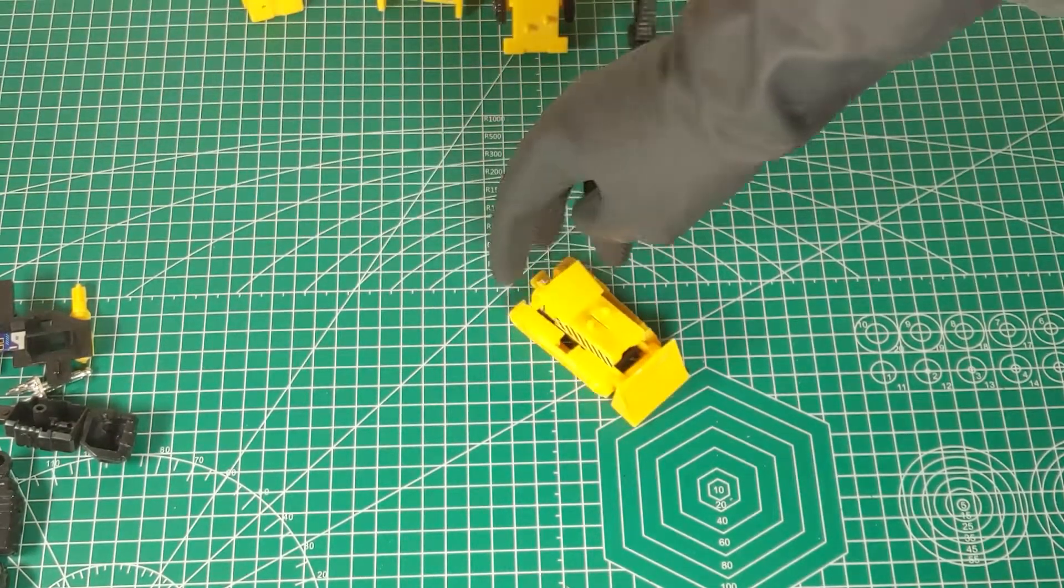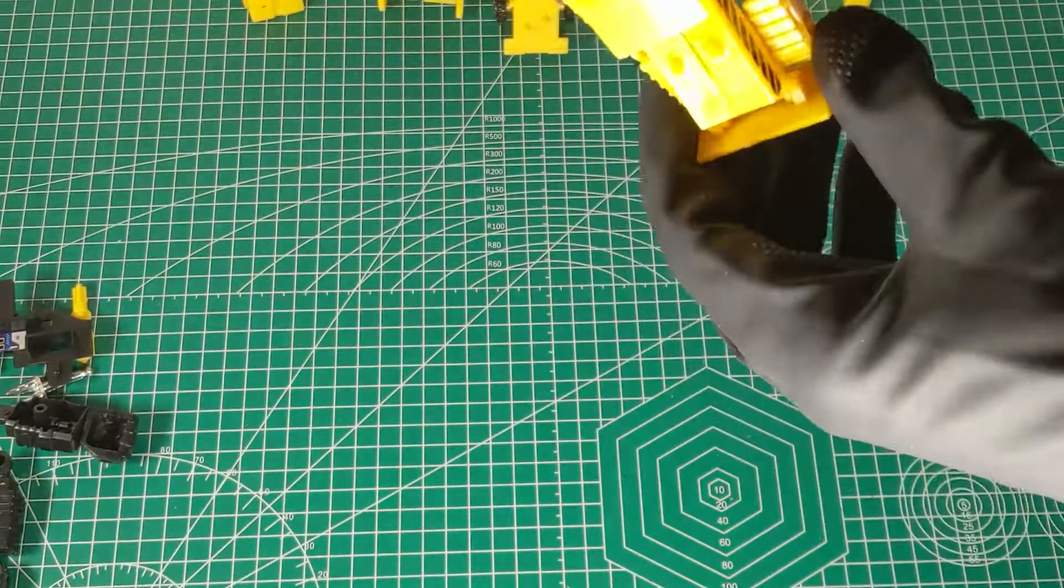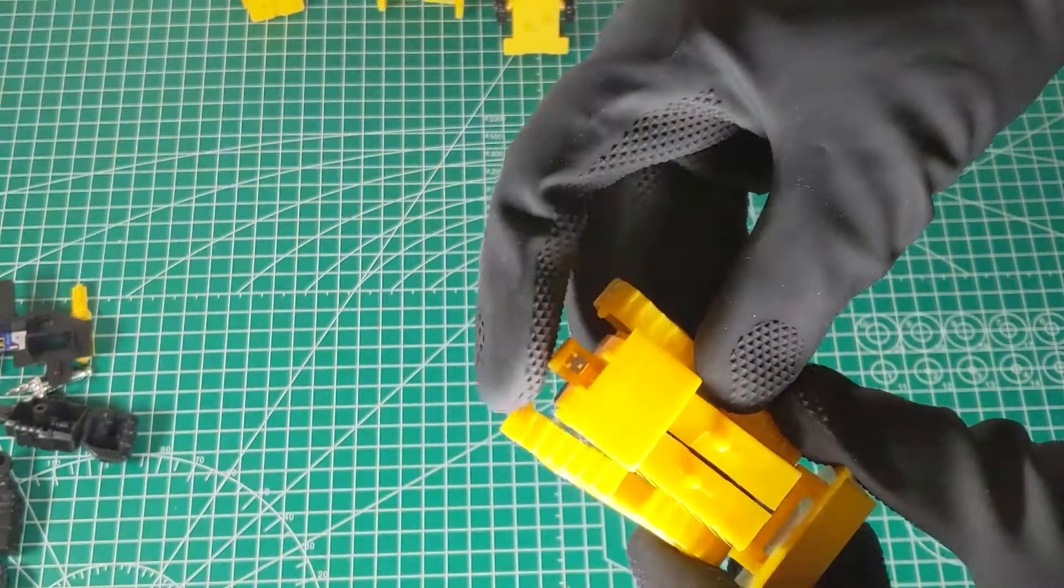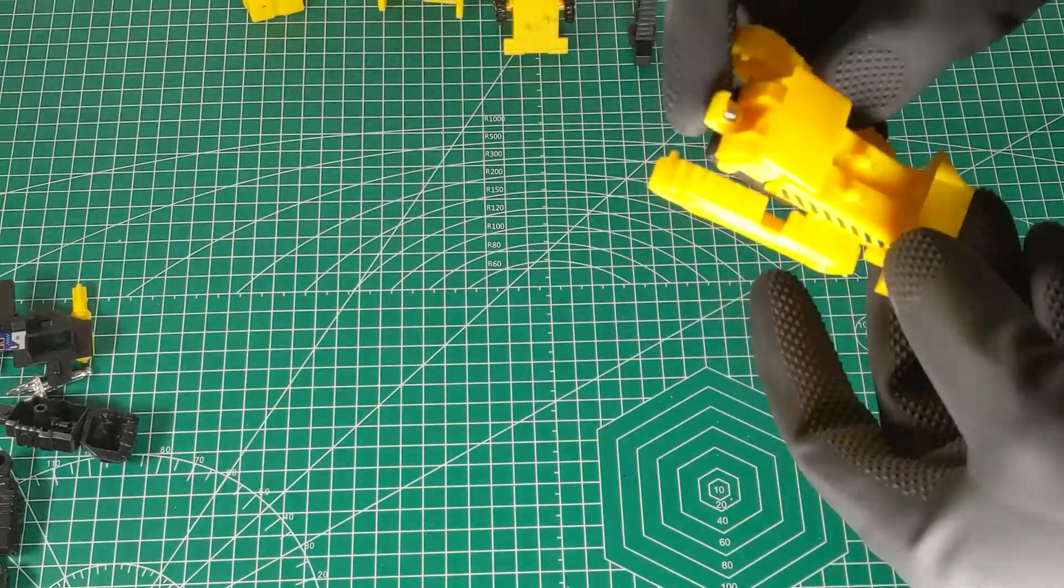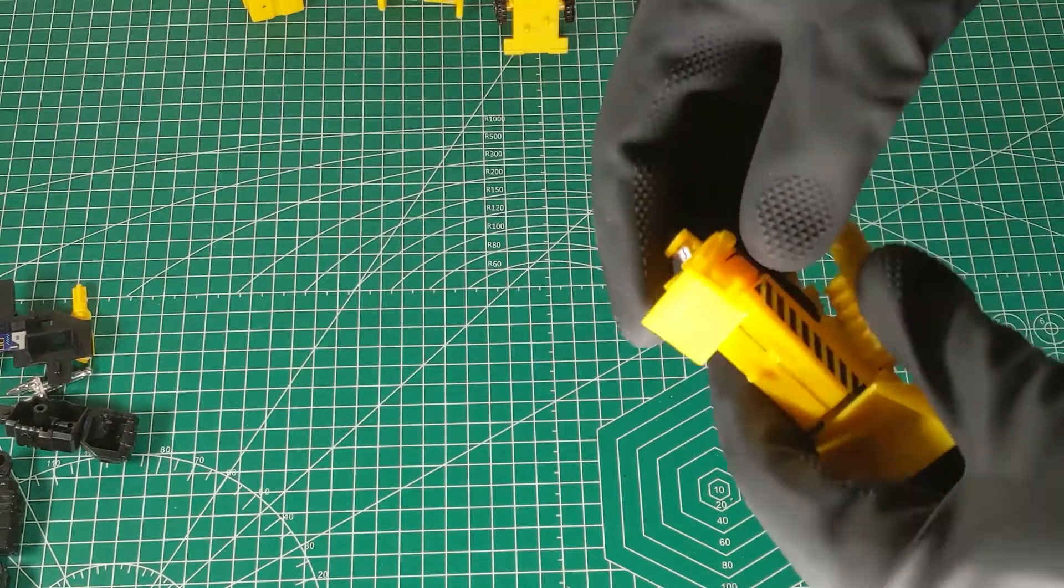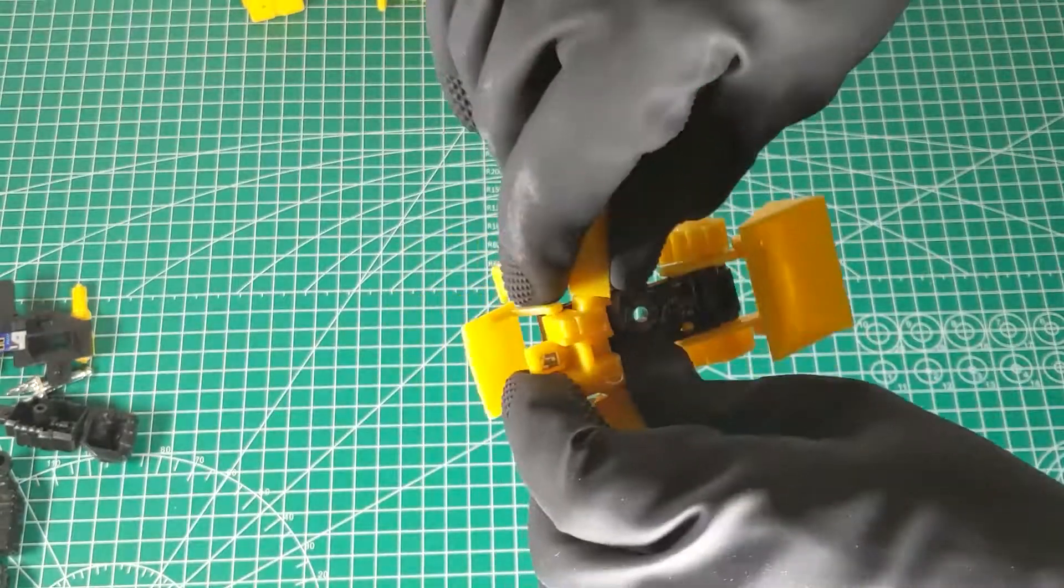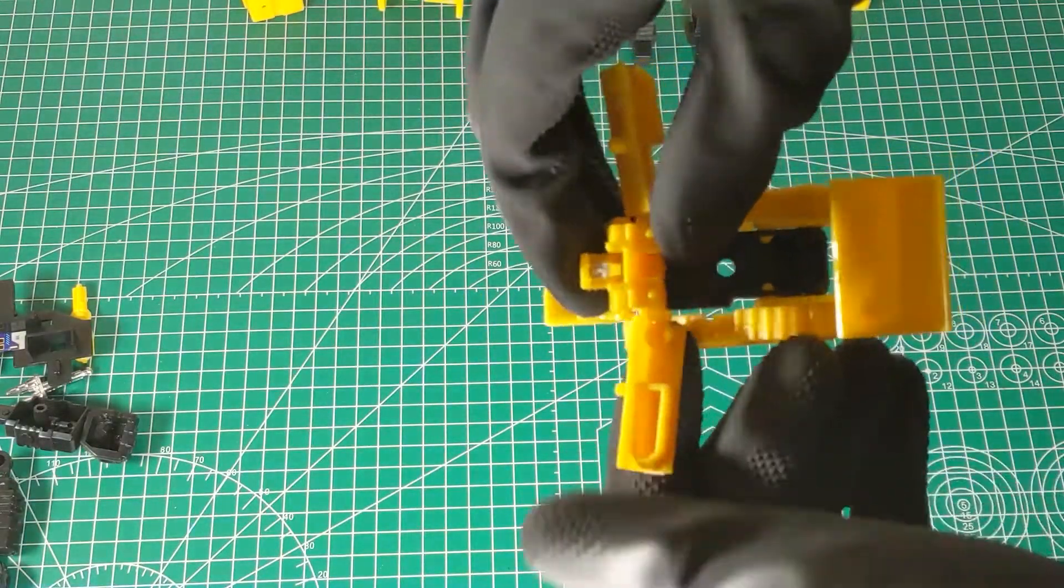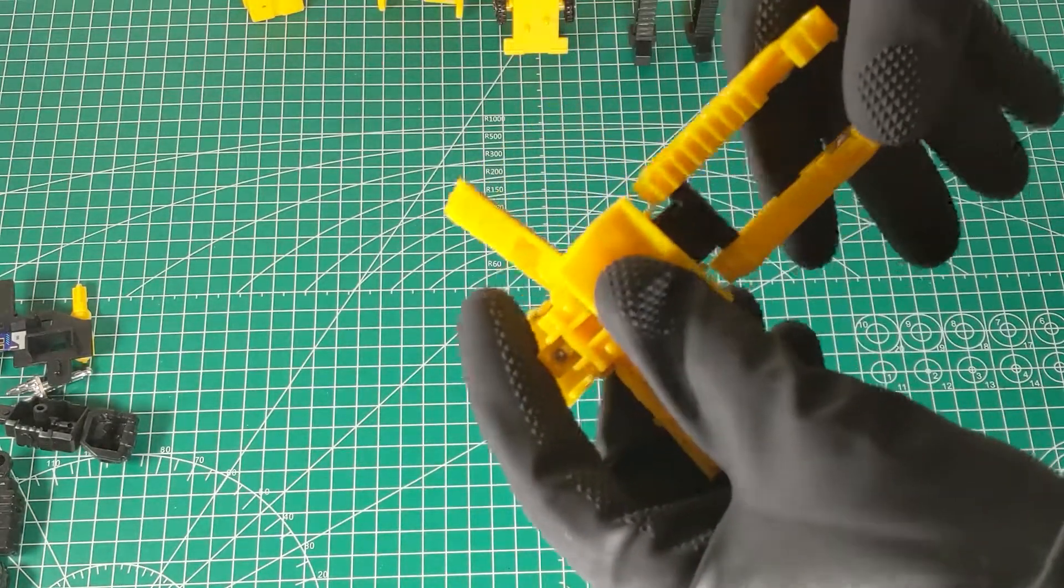And finally we have Bone Crusher, rolling on in here with his hinged canopy and not hinged head. But hey, what are you going to do? So it's probably the most awkward because he has no sticker decals, and his arms are one solid piece.